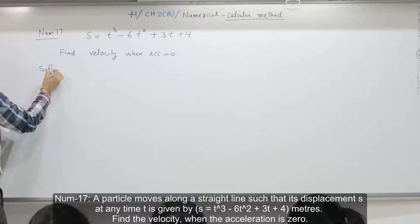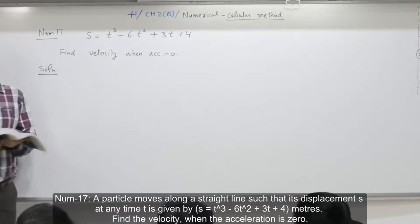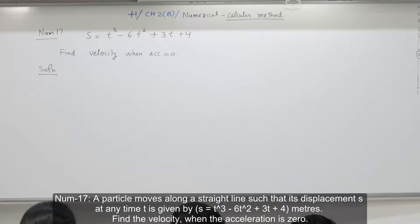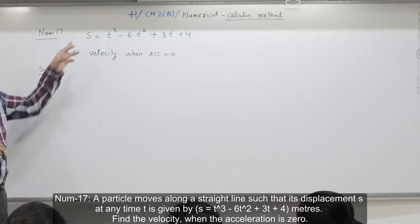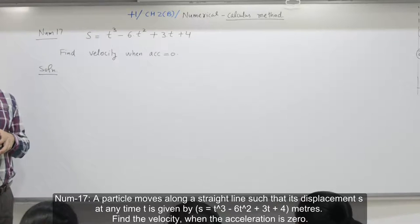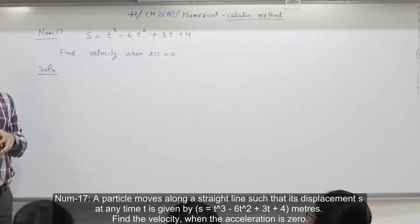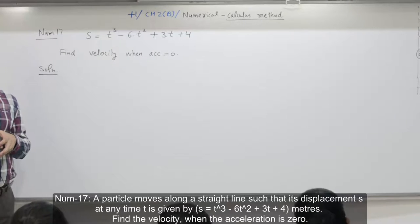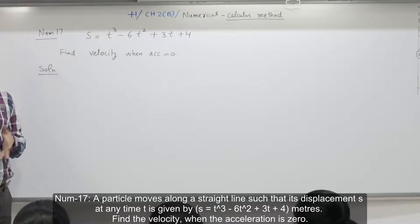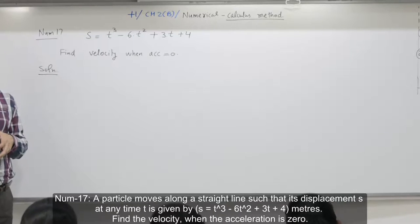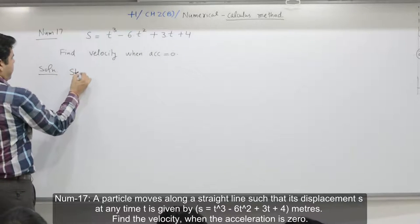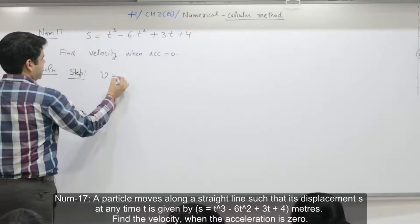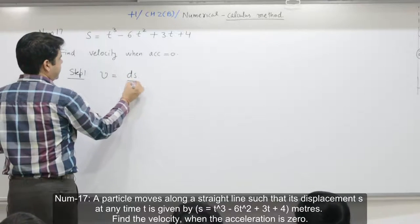s is given — how do you find velocity? By differentiation. You cannot apply v = u + at because nowhere is it written that it is uniformly accelerated motion. That is why step 1 is: v is equal to d/dt of s.